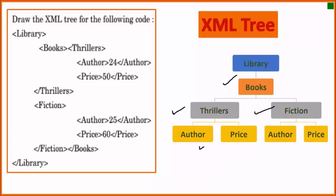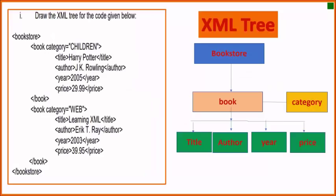Under 'Thriller', 'Author' and 'Price' are there, and for 'Fiction', 'Author' and 'Price', two nested elements are present. So here is the XML tree for this question.